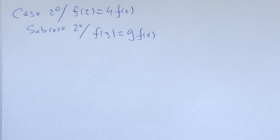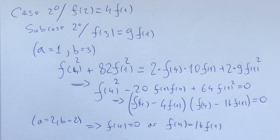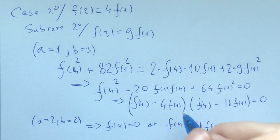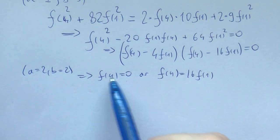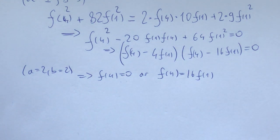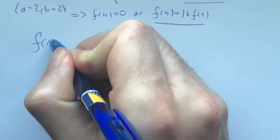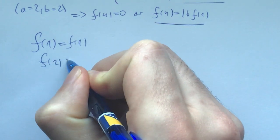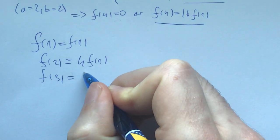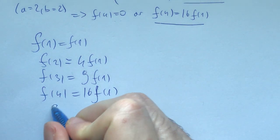Before showing you the solution to the second sub-case f(3) = 9f(1), I invite you to pause for 3 to 5 minutes and try to solve it yourself. The idea is to plug in a=1, b=3 and a=2, b=2. We get that f(4) must simultaneously be either 4f(1) or 16f(1), and at the same time either 0 or 16f(1). If f(4) = 0, then f(1) = 0 as well, producing another solution.